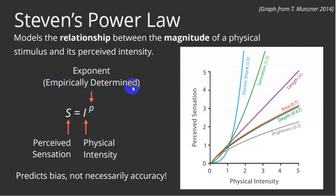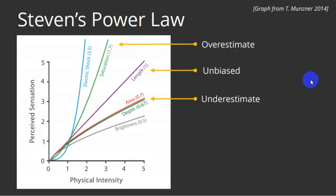So empirically determined, Stevens ran tests on hundreds of people. And I don't even know how many hundreds of different elements he tested. I'm going to show you a list in a second. So it's the actual physical intensity raised to this exponent equal to the perceived sensation, how it actually feels. And so actually, I'll just come to this plot here.